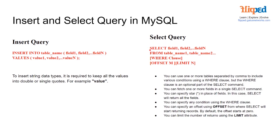Then we have our select query. The format is SELECT, then the fields, then FROM, then our table name or table names. Then we have our WHERE clause, and our OFFSET and LIMIT. You can use one or more tables separated by a comma to include various conditions using a WHERE clause, but the WHERE clause is optional. You can fetch one or more fields in a single SELECT command. You can specify star (*) in place of fields — in this case SELECT will return all fields. You can specify an offset using OFFSET from where SELECT will start returning records; by default the offset starts at zero. You can limit the number of returns using the LIMIT attribute.